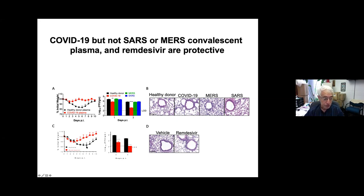Finally, we tested remdesivir, a compound that potently inhibits virus replication. Mice treated with remdesivir recover much more quickly and virus is cleared much more rapidly. Remdesivir really works well when given early during infection, and histological changes are reduced after remdesivir therapy.